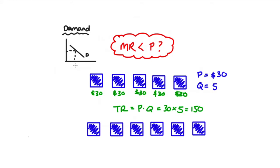Let's imagine that initially we're at a point P and Q, but then we want to increase our Q — going from Q equals five to Q equals six. We can see quite clearly that if we want to increase our production from five to six, we have to decrease our price. The market will not bear six units of that box at the initial price. We have to decrease our price.